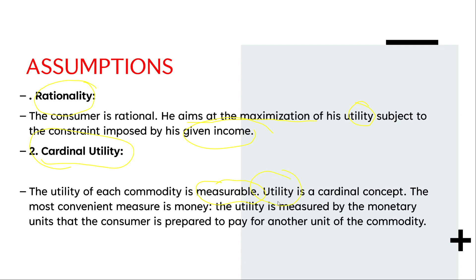Utility is a cardinal concept. The most convenient measure is money. The utility is measured by the monetary units that the consumer is prepared to pay for another unit of a commodity. So, utility is measured on the basis of monetary units — specifically, according to what the consumer is willing to pay for each additional unit of a commodity.